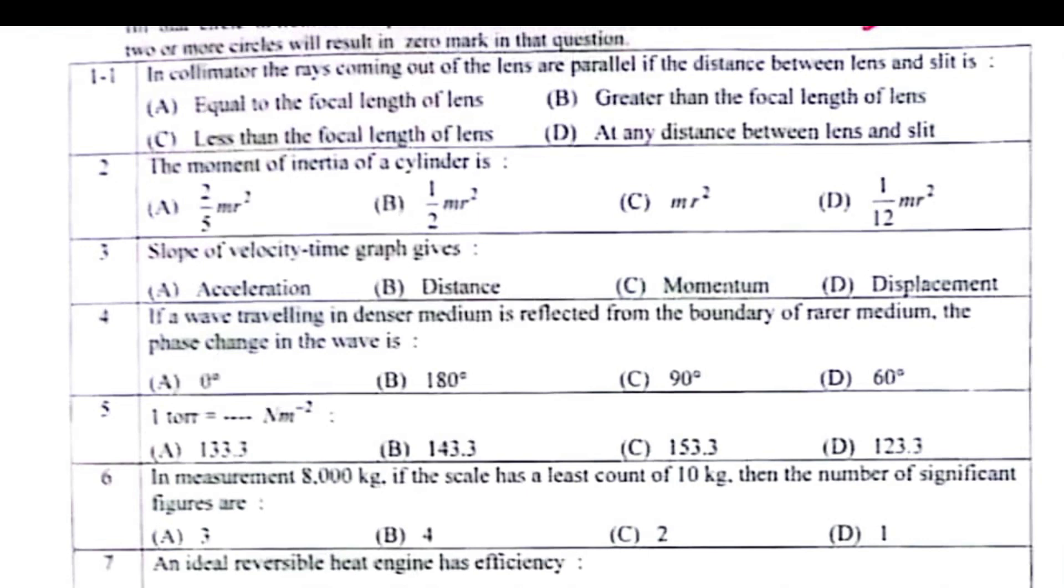In collimator, the rays coming out of the lens are parallel if the distance between lens and slit is greater than the focal length of lens.